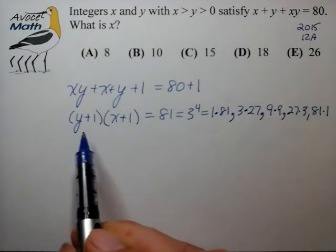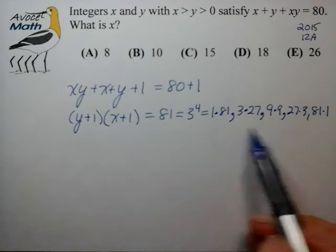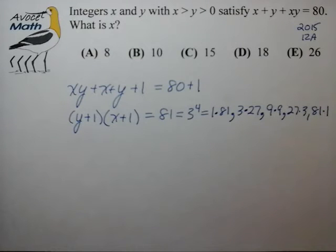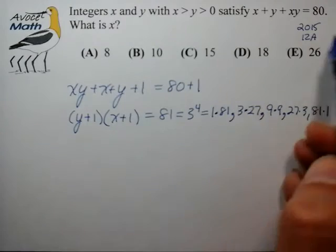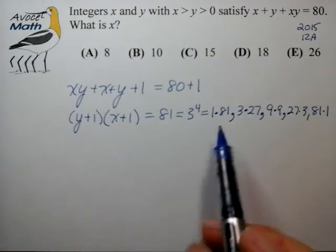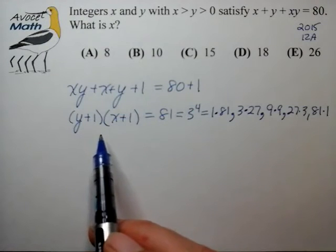Now at this point, since we have integer factors on the left side and integer factors on the right side, we know from the fundamental theorem of arithmetic that these factors have to match up. And so now we can take the information from the problem and try to see how we can match up the factors on the right to the factors on the left.